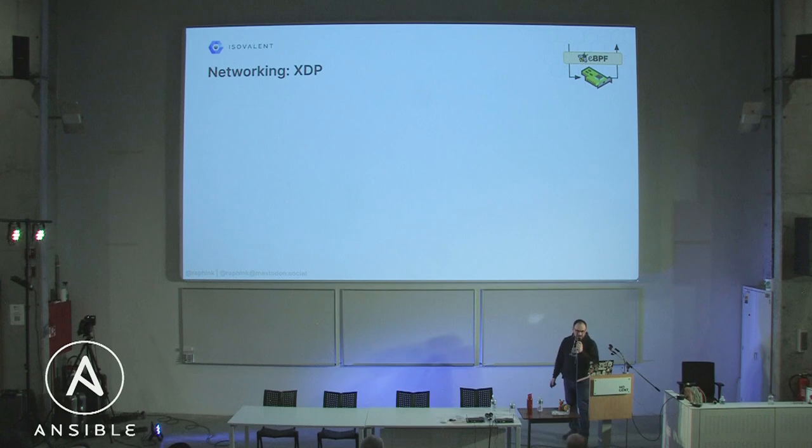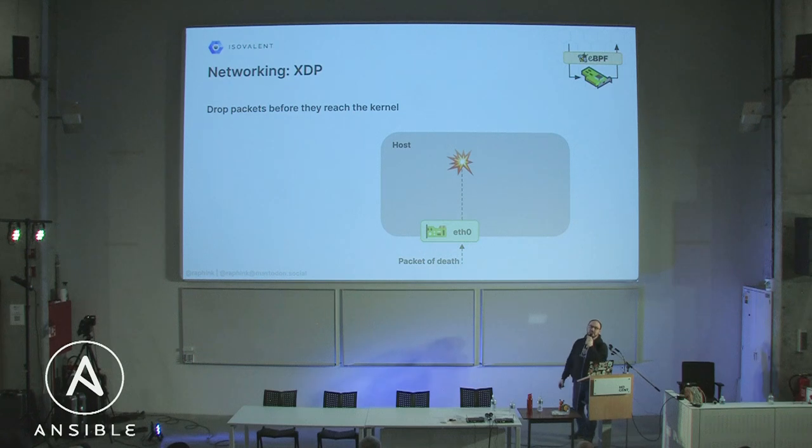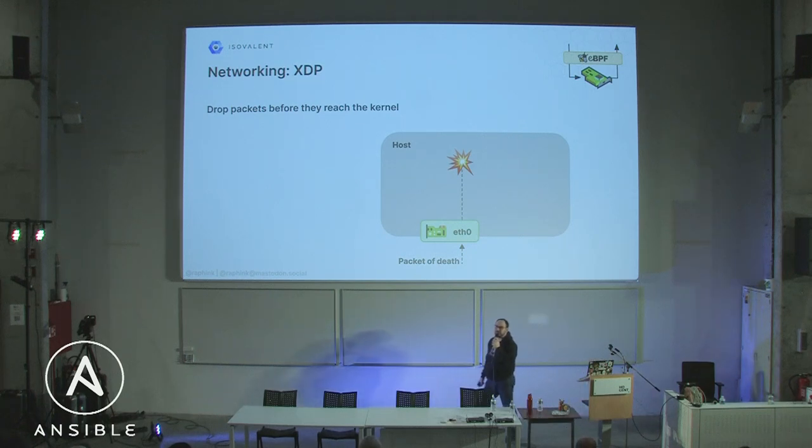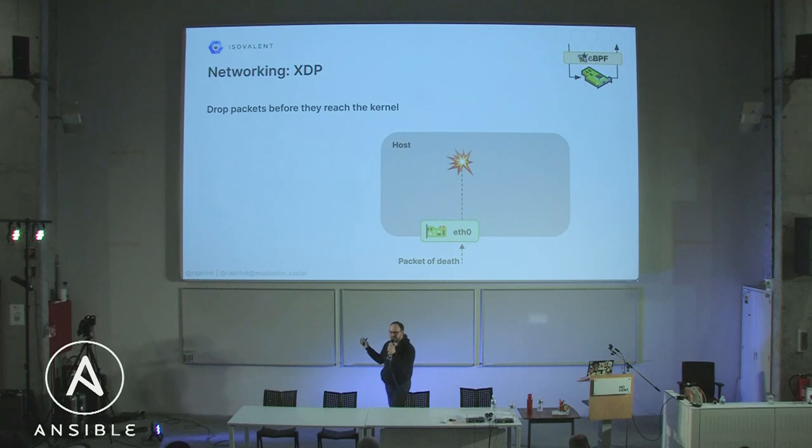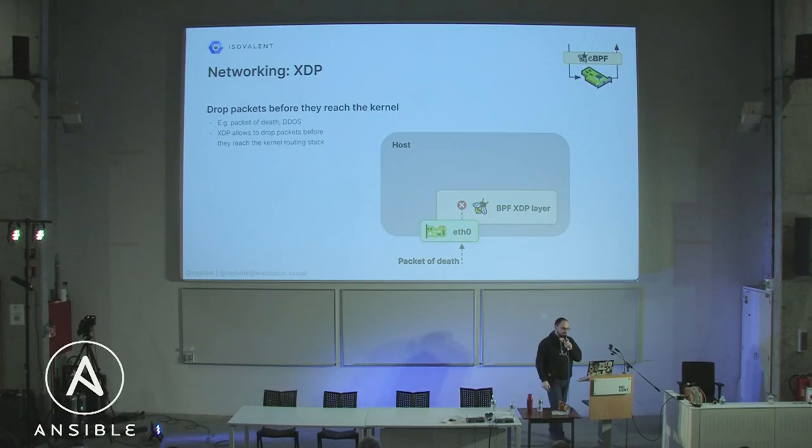XDP — express data path — allows dropping or rerouting packets before they reach the socket level in the kernel, before they get associated to a socket buffer. For example, take the packet of death vulnerability — an ICMP packet that would crash the machine when it arrived. Using an eBPF program, we can detect that packet before it gets associated to a socket buffer and drop it. We can say: this packet doesn't pass, it doesn't reach the kernel, it will not trigger the vulnerability.